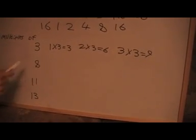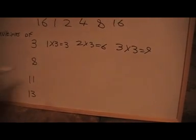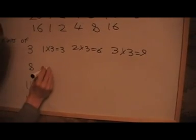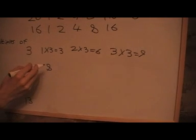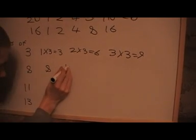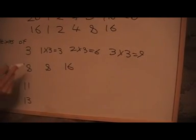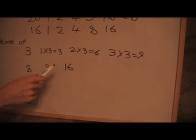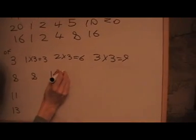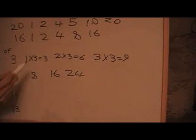To find the first 3 multiples of 8: 1 times 8 is 8, 2 times 8 is 16 for the second multiple, and 3 times 8 is 24 for the third multiple. You should know your times tables.